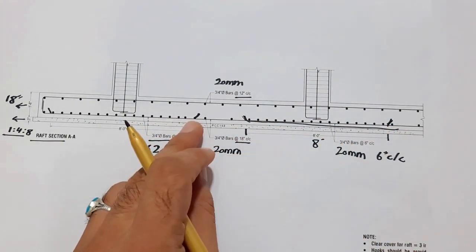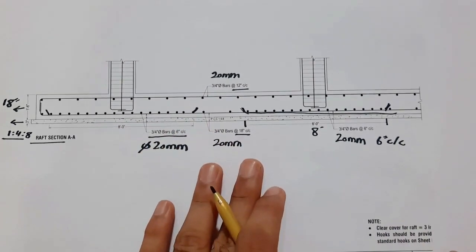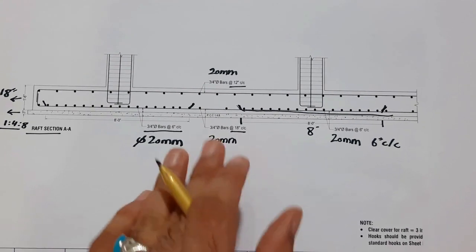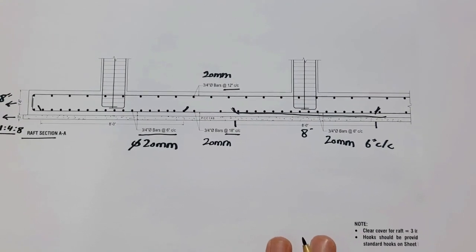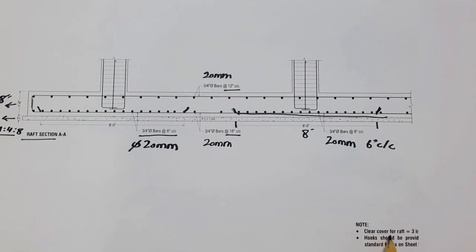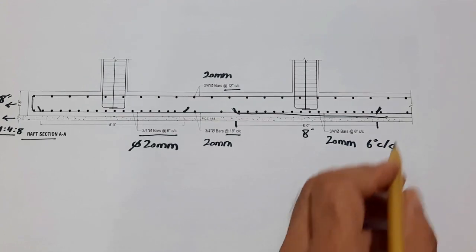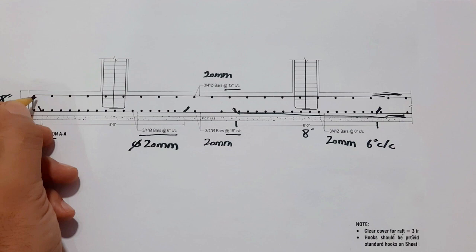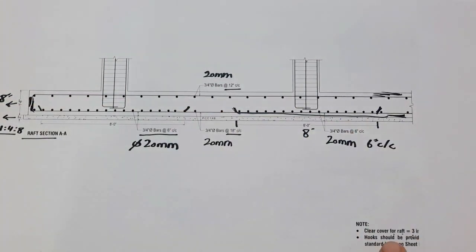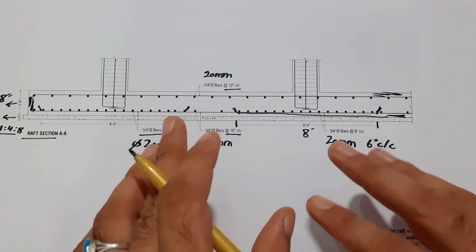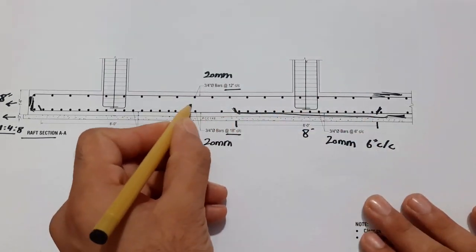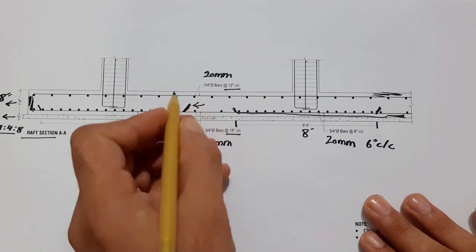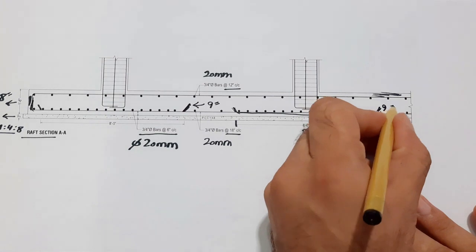This is a short video which I've discussed how to read engineer raft foundation drawing. Now come to its notes. Clear cover for raft should be three inches - each side top should be three inches, bottom should be three inches, also each side should be three inches concrete cover. Standard hooks should be provided on steel. The development length should not be less than 12 inches and the hooks length should not be less than, especially in raft foundation, nine inches each side.